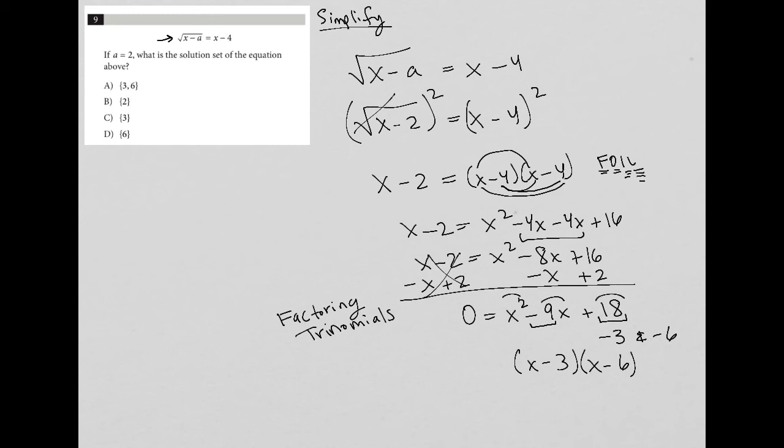You're looking for which two numbers multiply to give you the last term, but add up to the middle term. So for instance, negative 9 times negative 2 also equals positive 18, but it does not add up to negative 9. So that would not be a good combination. So our numbers here are negative 3 and negative 6.